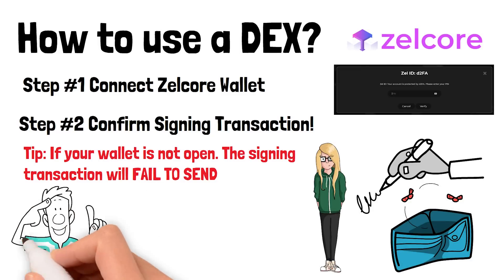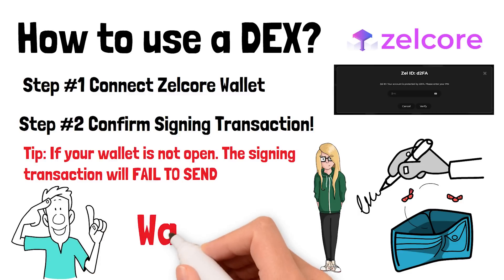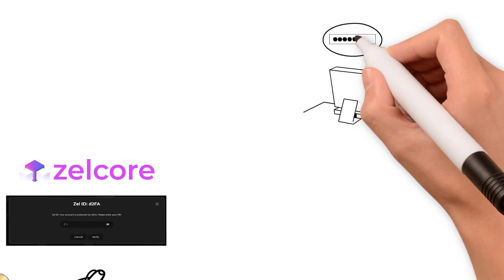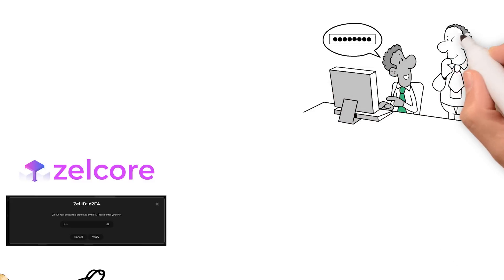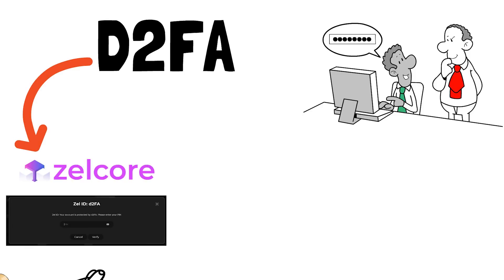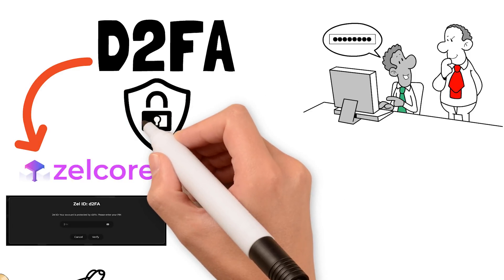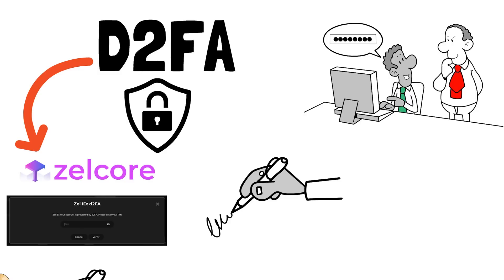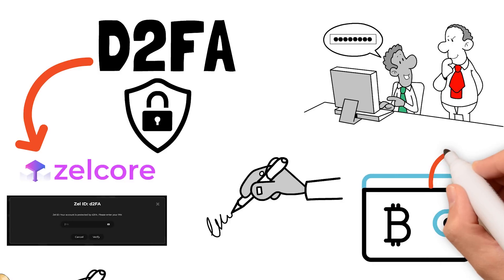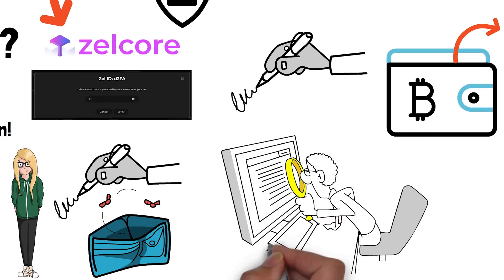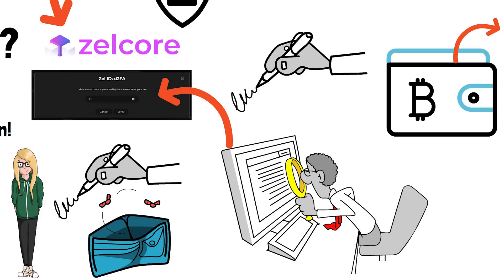The signing message also lets you know that you're giving a DEX permission to access your funds and reminds you to be careful. That might sound scary, but crypto wallets have added additional security measures. For example, Zelcore uses D2FA — decentralized two-factor authentication. Even after connecting my Zelcore wallet to KadeX, if I want to stake, swap, or transfer any coins, I need to re-enter my D2FA code and approve the transaction before any coins can leave my wallet. When you first connect your wallet, you only give the DEX the ability to view your balance — draining your funds would be impossible without your private keys.